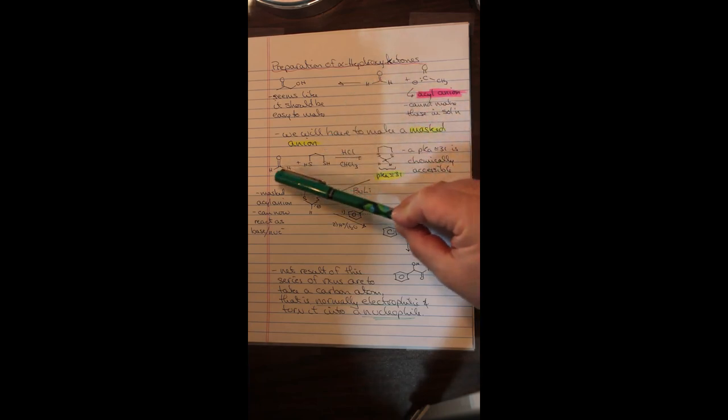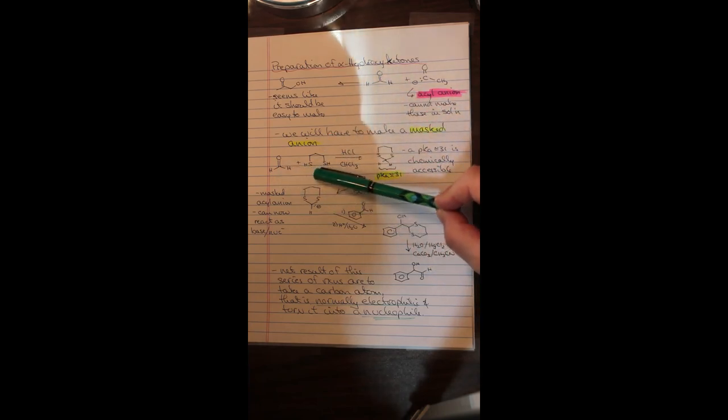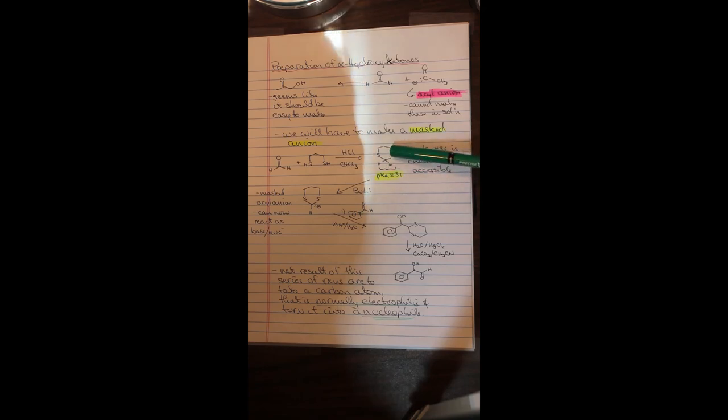So what we're going to do is we're going to create a masked acyl anion, I've just called it a masked anion here, but that's what it is. Now what we're going to do is we're going to take formaldehyde and we're going to treat it with this dithiol. This is going to generate a thioacetal for us. And the interesting thing about this is this thioacetal, with these two sulfur groups here, this methylene group actually becomes somewhat more acidic, as a pKa of approximately 31. Now this is not super acidic by any stretch of the imagination, but it's certainly chemically accessible to us in the lab.